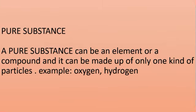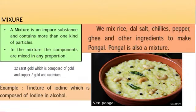A pure substance is made up of only one kind of particle. Pure substances may be elements or compounds. A mixture is an impure substance and contains more than one kind of particle. In a mixture, the components are mixed in any proportion.